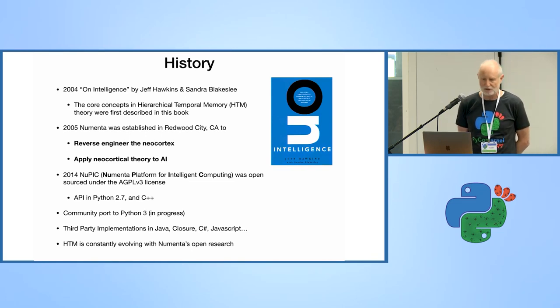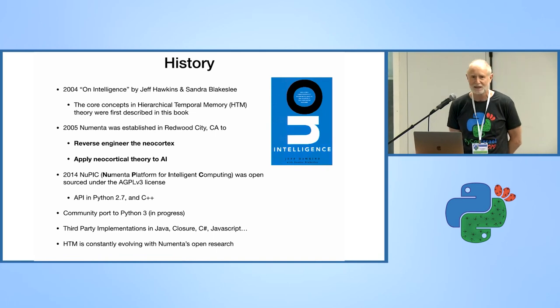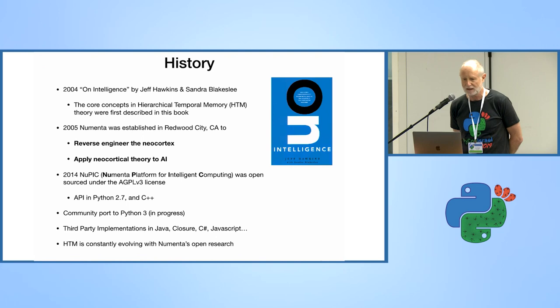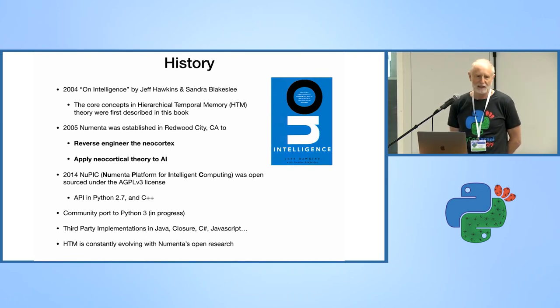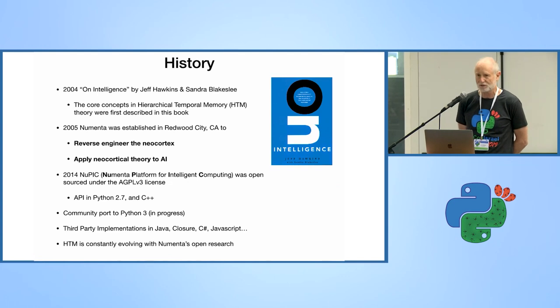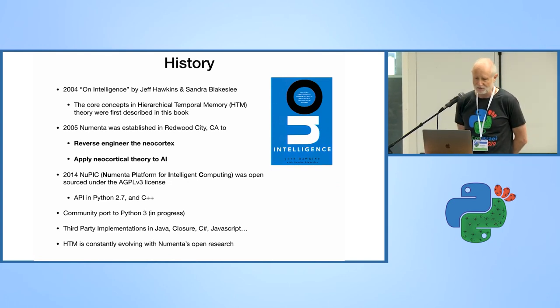A little bit of history. The ball started rolling in 2004 when Jeff Hawkins, who invented the Palm Pilot, made his millions, sold his business, and formed a research lab to reverse engineer the neocortex and apply what he learned to AI. After a few years, he released his work as open source. Though the API's still in Python 2.7 and C++, there's a community effort now porting it to 3.0. Lots of third-party implementations already in almost every language. It's constantly evolving. As they learn more about the neocortex, they improve the model of HTM.